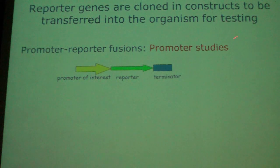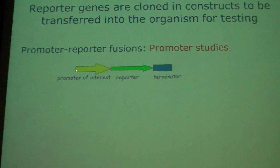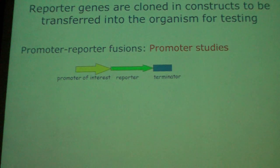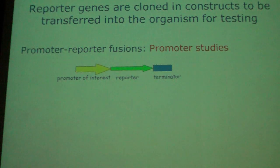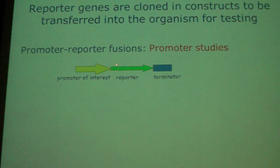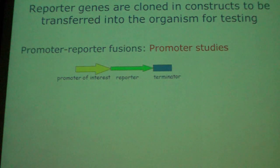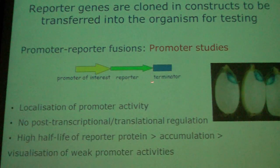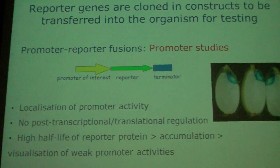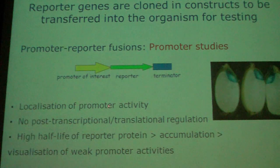A very basic promoter-reporter fusion: you take a promoter you're interested in, a certain gene whose promoter behavior you want to study, place the reporter gene behind it, then add a transcription terminator. You transfer this construct — in this case into wheat — and you can localize the promoter activity.